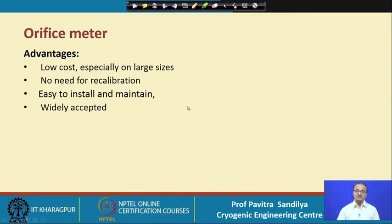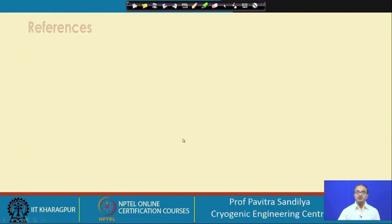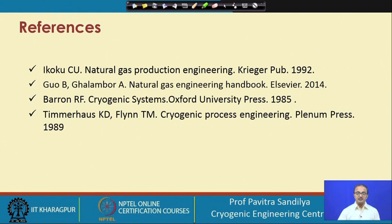The advantages of the orifice meter are: low cost especially for large sizes, no need for calibration, easy to install and maintain, and widely accepted. The disadvantages are: poor turndown ratio (the ratio between maximum and minimum acceptable flow rates), long installation requirements of about 20D to 30D (where D is the pipe diameter), and accuracy dependent on geometry. More detail can be obtained from the references provided.